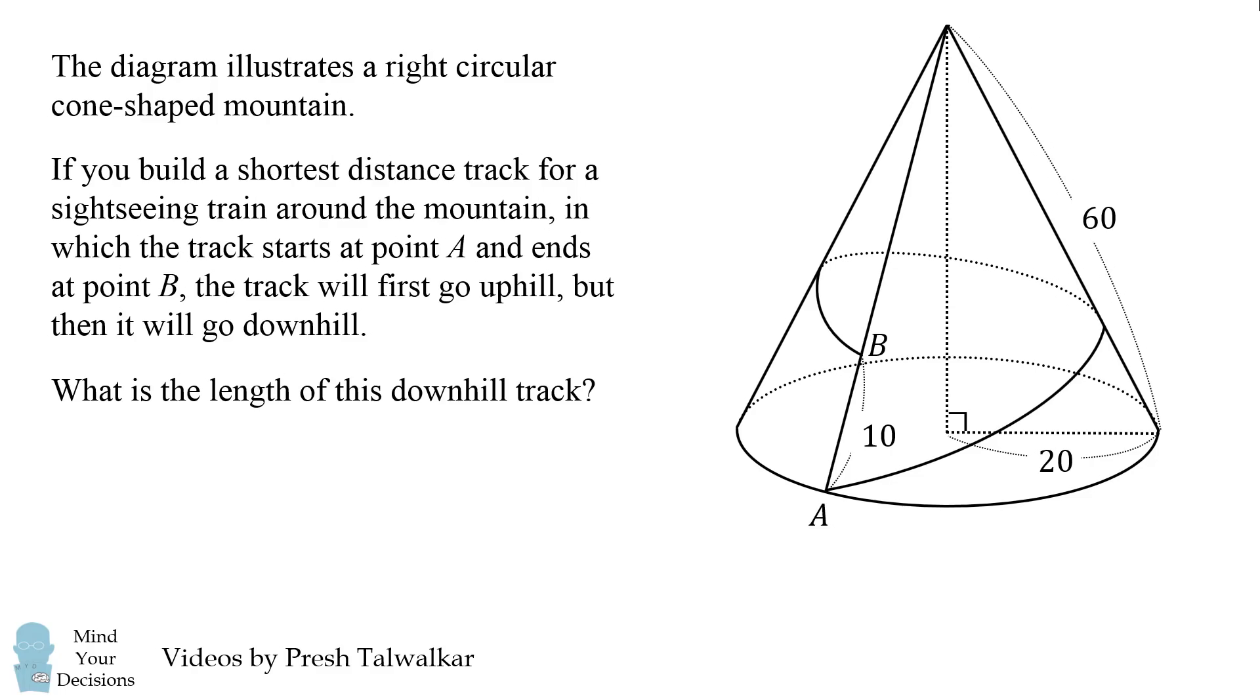Wow, even this problem is pretty complicated to understand. But lucky for you, it's multiple choice. So there are four possible answers: 200 divided by the square root of 19, 300 divided by the square root of 30, 300 divided by the square root of 91, and 400 divided by the square root of 91.